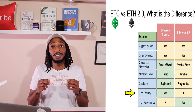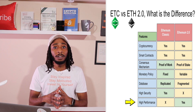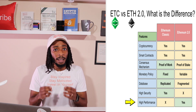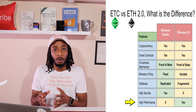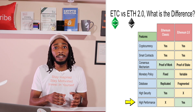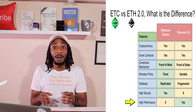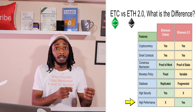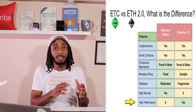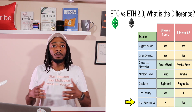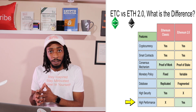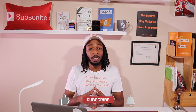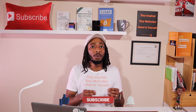Finally, regarding performance: Ethereum Classic goes for integrity over performance and scalability, whereas the whole reason Ethereum is moving from layer one proof of work to layer two proof of stake is to be more scalable. That advantage goes to Ethereum 2.0. In a nutshell, that is the difference between ETC and Ethereum 2.0.